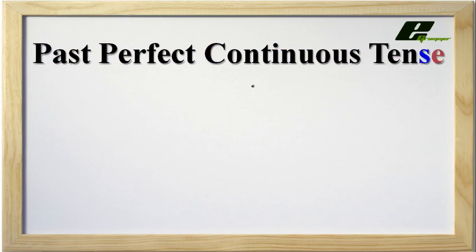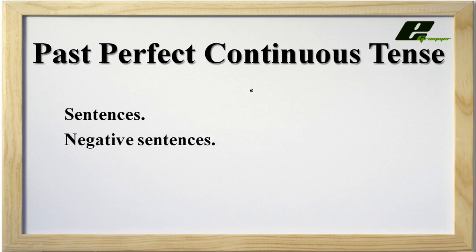Hello everyone. Let us see Past Perfect Continuous Tense. In this part we are going to see sentences, then negative sentences, and then questions. A question comes in mind: when do we use this Past Perfect Continuous Tense? This tense shows that the action which was started in the past and continued for a particular time period in the past and finished after that, and which is not going on at this time.